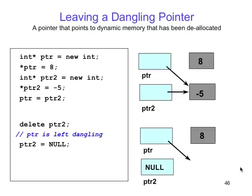Here is leaving a dangling pointer — another problem, not the same as the inaccessible object. Here we have a pointer that points to dynamically allocated memory that's been deallocated. When we use delete here, we say delete PTR2 — PTR2 is left dangling. That's why we set PTR2 equal to null. If we make it equal to null, it doesn't point to anything. If we set PTR to null without using delete — we skipped the delete — then we've created an inaccessible object. But here we've deleted it, we just didn't do that little step.